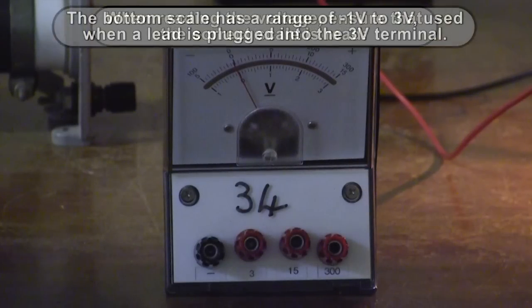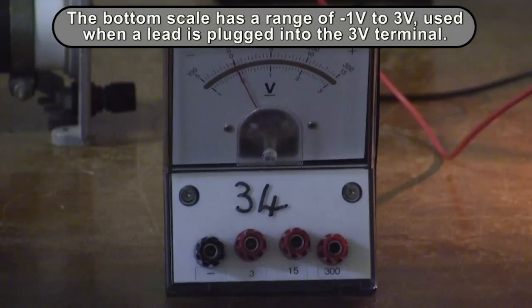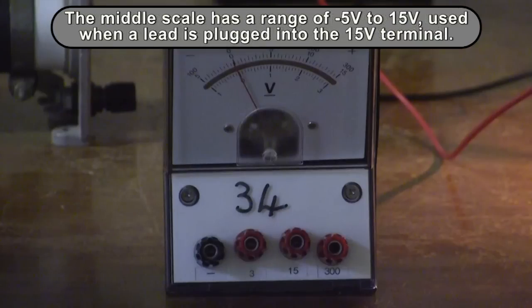The bottom scale has a range of minus 1 volt to 3 volts and is used when the lead is plugged into the 3 volt terminal. The middle scale has a range of minus 5 volts to 15 volts and is used when the lead is plugged into the 15 volt terminal.